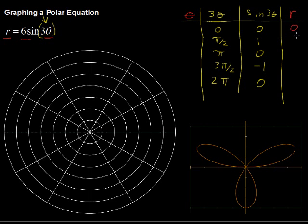So we've got 0, 6, 0, negative 6, 0 and so on. And we will add actually a few more values in here.